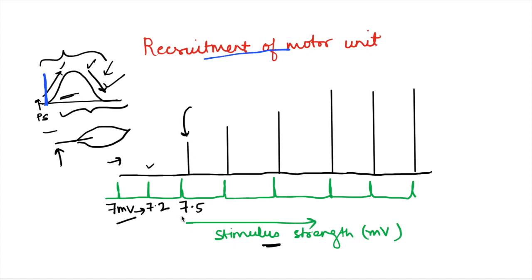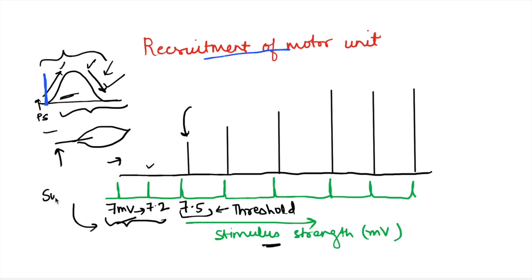The strength of stimulus at which contraction just occurs is called the threshold stimulus. Below that, where no contraction occurs, is known as sub-threshold stimulus. When the stimulus strength is below the threshold we get no contraction. We then slowly keep on increasing the stimulus strength.